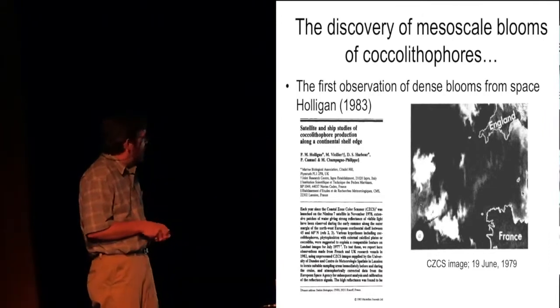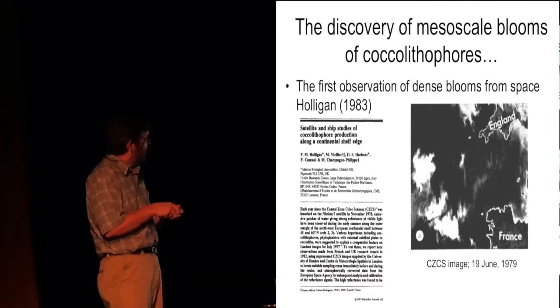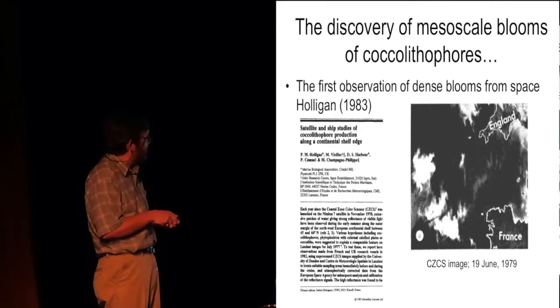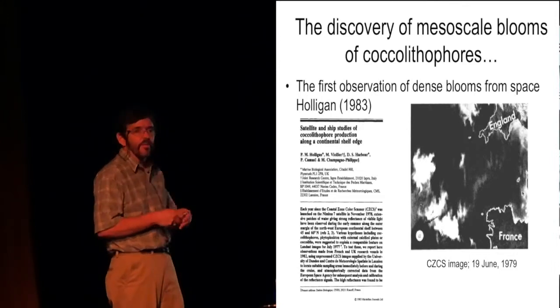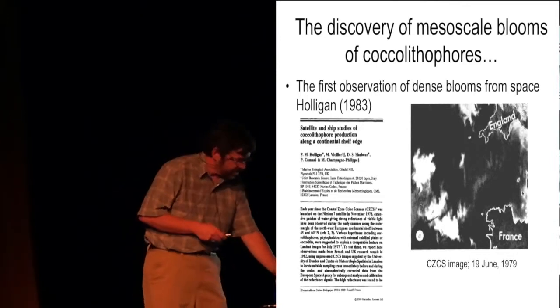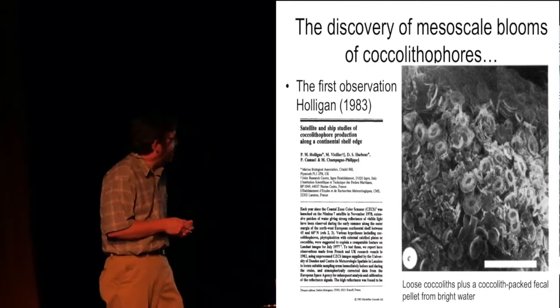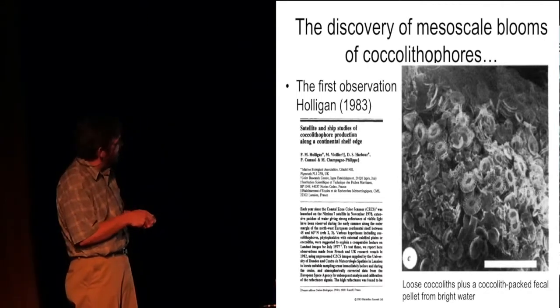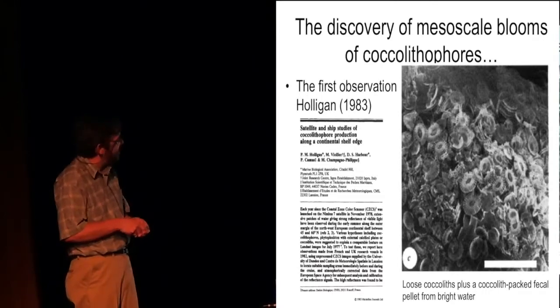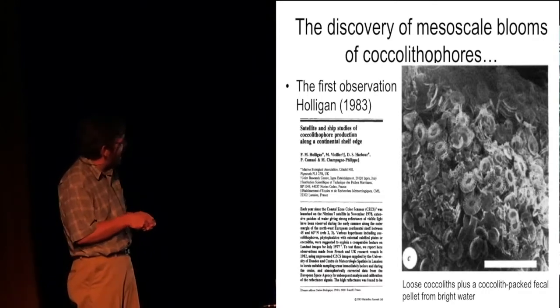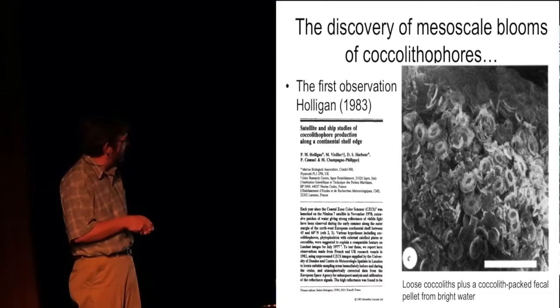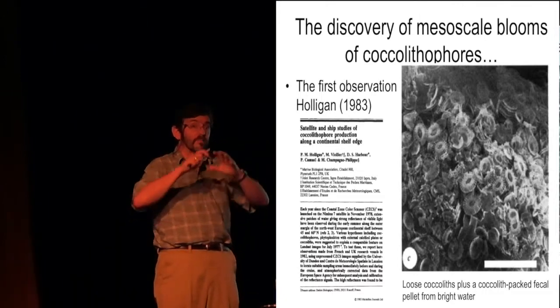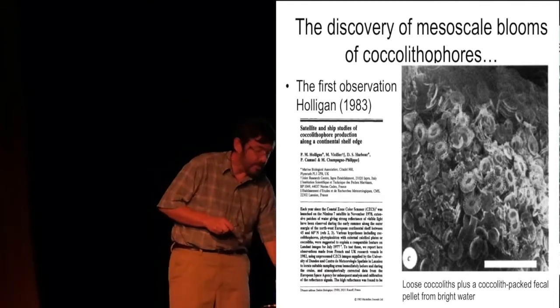So the discovery of mesoscale blooms of coccolithophores, mesoscale meaning over very large scales, by Halligan in 1983 really changed the way people thought about these organisms. And this is from a nature paper. And what he saw, it doesn't look like much now, but it was a very crude image. He saw these high reflectance features. Here's France and England off of the Western European continental shelf. And when he went out there in a boat, got his hands wet, and looked at the material, this is a fecal pellet of a zooplankter that's packed with these coccoliths, these calcium carbonate plates. And so this was the first inkling that such blooms existed, large blooms.